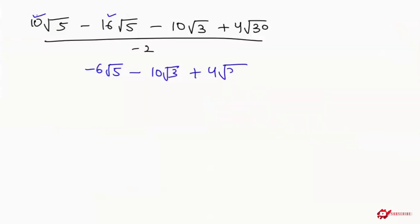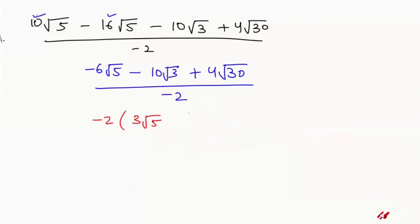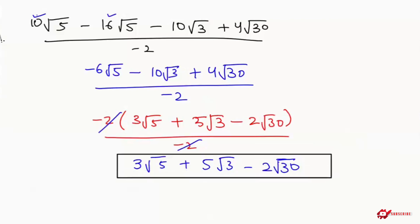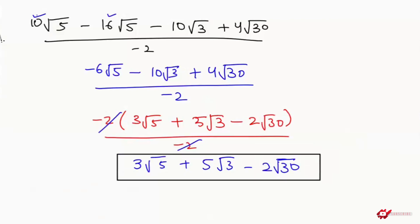Next I am going to take a common factor of minus 2: minus 2 times (3 root 5 plus 5 root 3 minus 2 root 30) over minus 2. So the minus 2 terms get cancelled, and we get 3 root 5 plus 5 root 3 minus 2 root 30. So this is our final answer. Thank you so very much for watching my video. If you like my video, please do subscribe to my channel.